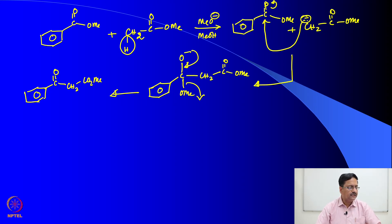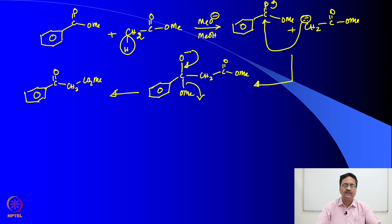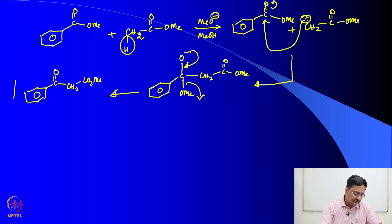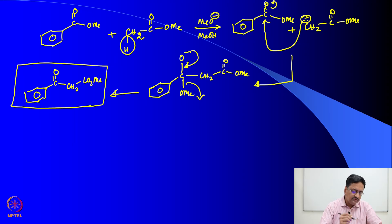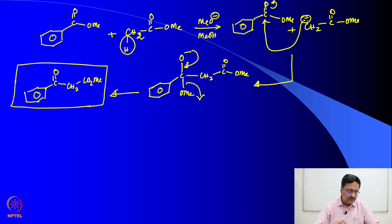One can use Claisen condensation also in a crossed manner, just like cross aldol condensation, to arrive at a specific organic compound in a very efficient manner.